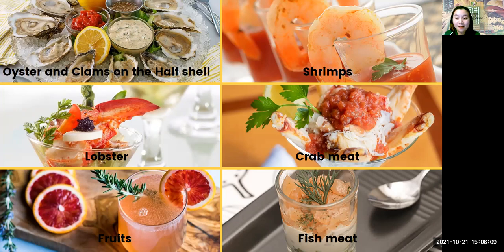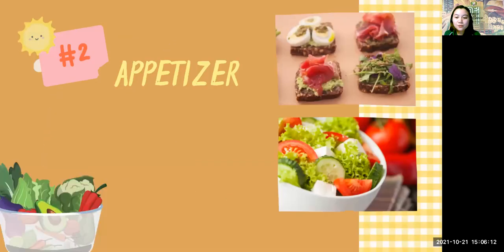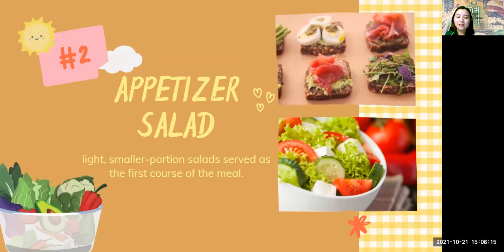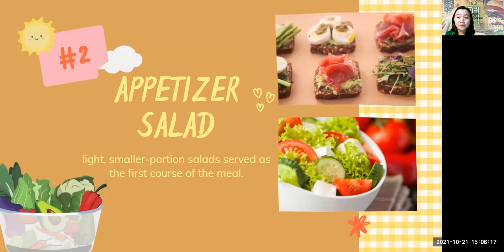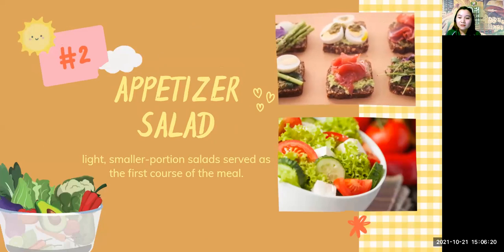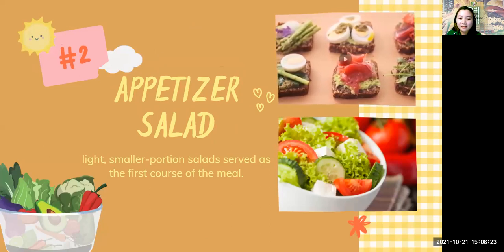The second classification is the appetizer salad. From the word itself, the component is a salad — it is a light, small-portion salad served as the first course of the meal. Its primary purpose is also to stimulate the appetite, which is why it is commonly served before the main dish. This salad can be either a cooked or non-cooked variant.